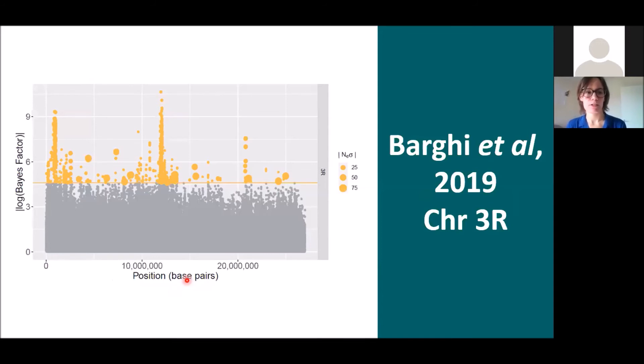Simulations are very nice, but we also want to make sure that our method performs well with real data. So what we did was we took Neda's dataset. Neda and co-authors actually published this dataset back in 2019 and Anna mentioned it earlier today as well. I'll just do a quick recap. Basically they've set up this experiment using Drosophila simulans populations. They've replicated them 10 times, so 10 replicate populations, and they tracked their evolution for 60 generations. So we took their data and applied Bait-ER.